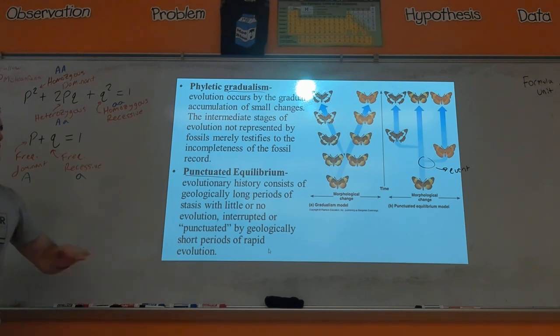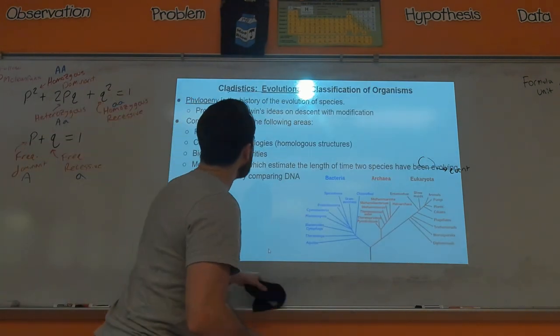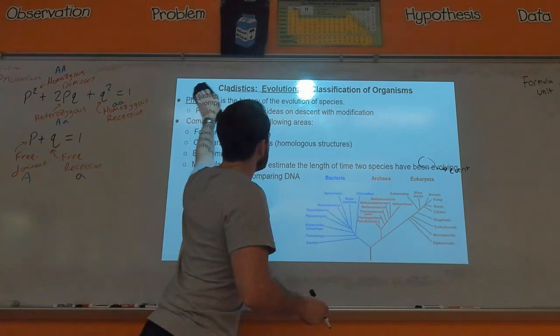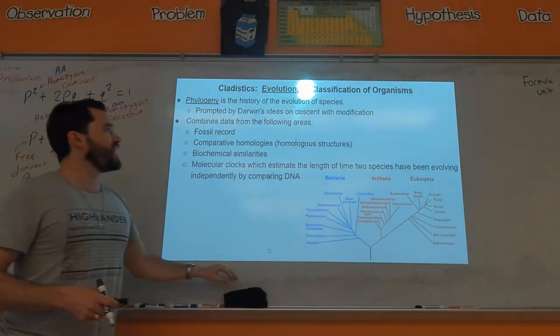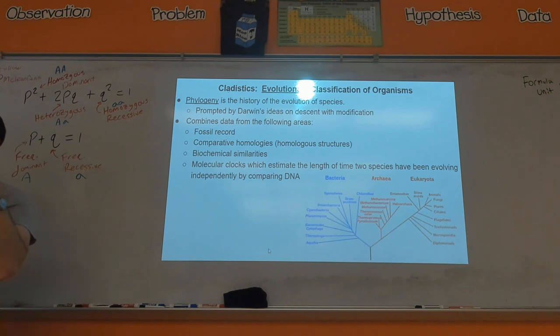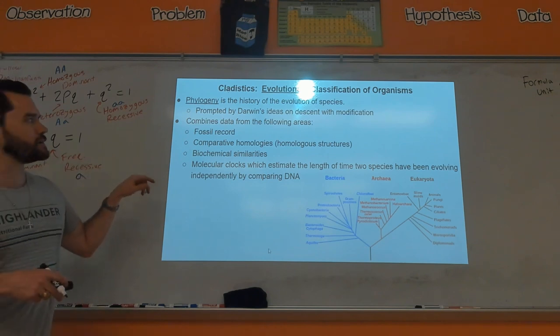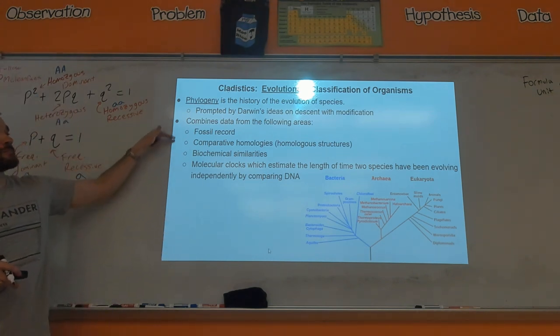Okay, now getting into phylogeny. Phylogeny and cladistics, those terms are essentially synonyms. Basically what we do in phylogeny is we're trying to get an idea of a timeline of evolutionary history—how would we organize the history of how species have evolved?